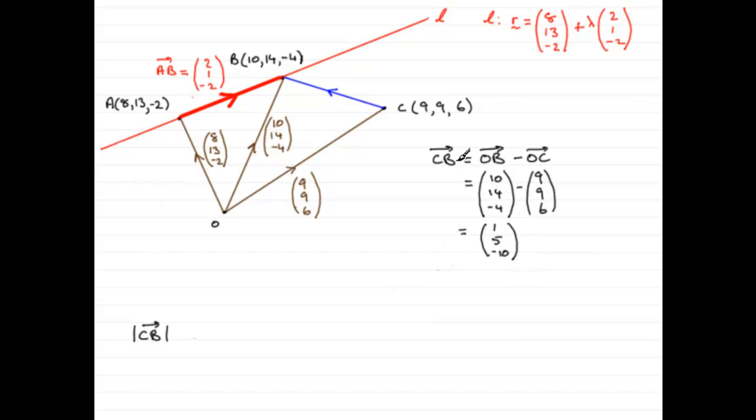As I say, if you worked out B to C, it's only going to be negative 1, negative 5, and plus 10. It's not going to alter the length, or some people call it the magnitude, of this vector.